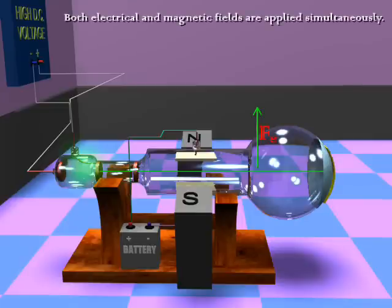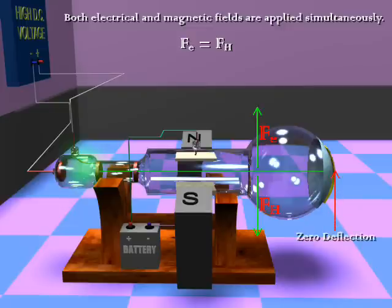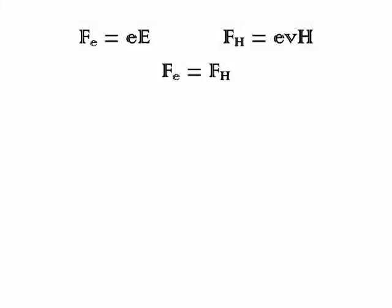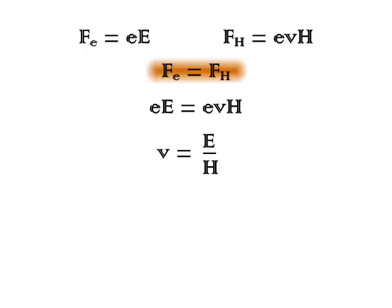Firstly, both electrical and magnetic fields are applied simultaneously. They are adjusted in such a manner that these two forces cancel out each other. This is achieved when there is zero deflection of the beam. At this stage, FE equal to FH, or e into E equal to e into V into H, or V equal to E divided by H.